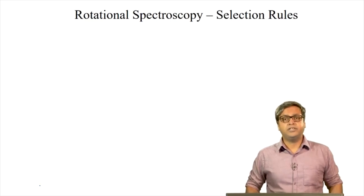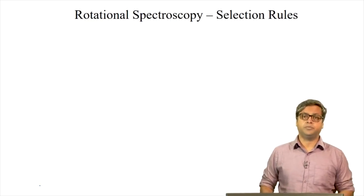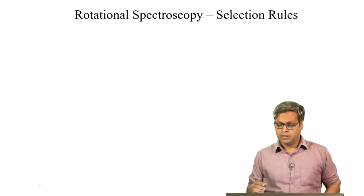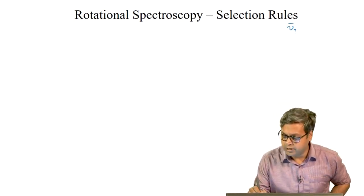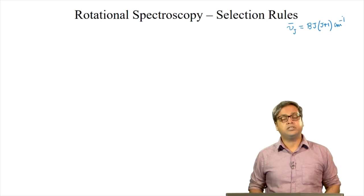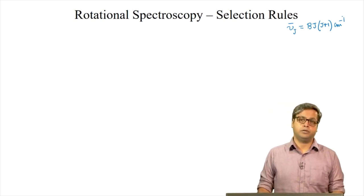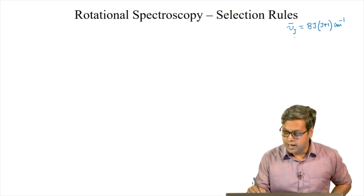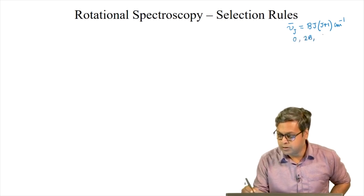In the last lecture, we obtained a physical understanding of the origin of rotational spectroscopy. We saw that the energy of the Jth level, ν̄_J, can be expressed as B times J times (J+1) centimeter inverse, where B is the rotational constant and J is the rotational quantum number. We can write the energies of the different rotational levels as 0, 2B, 6B, etc., and these energies are in wave numbers.